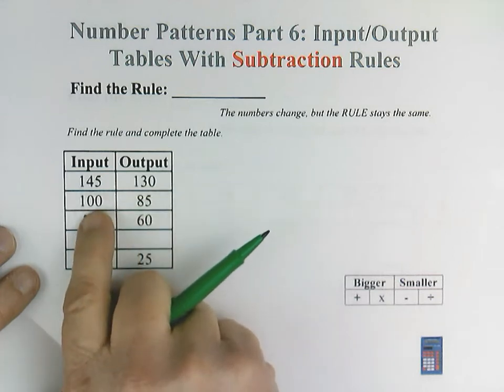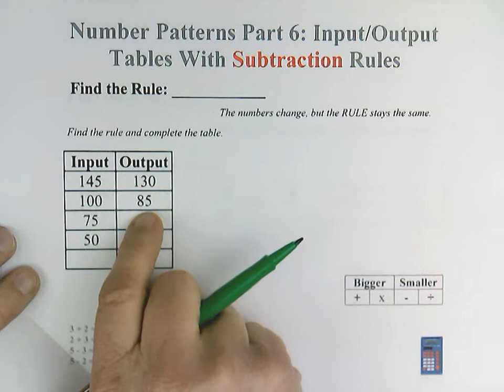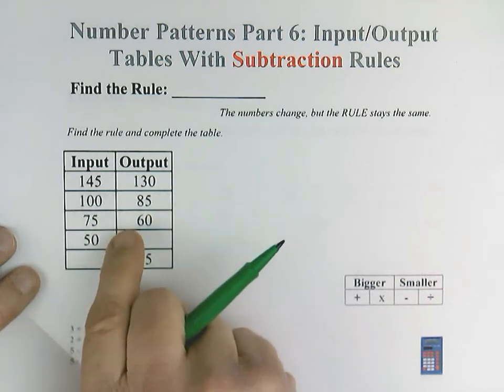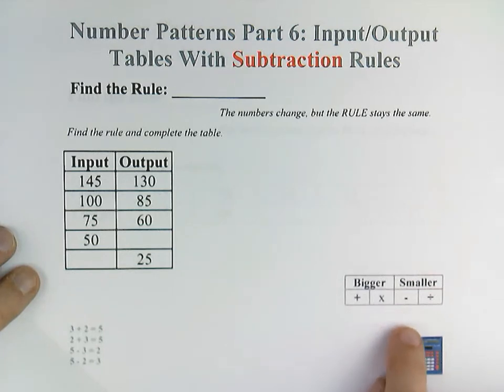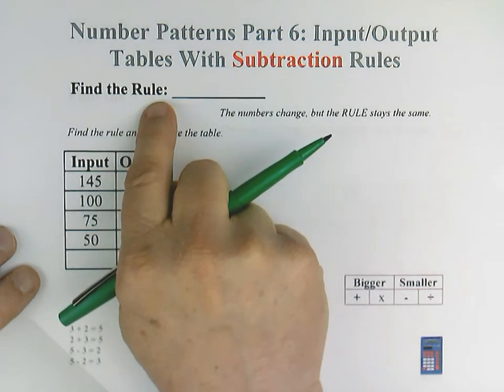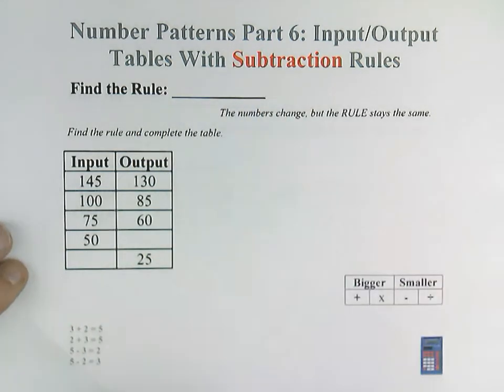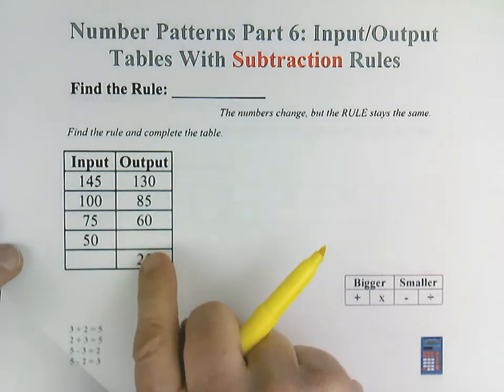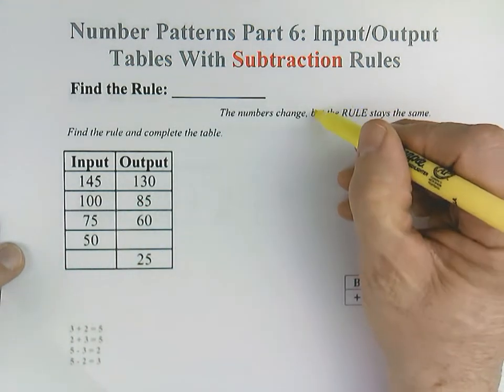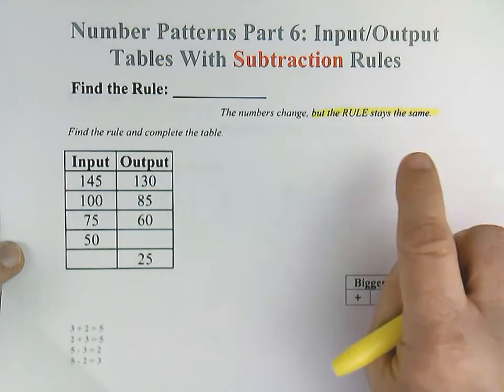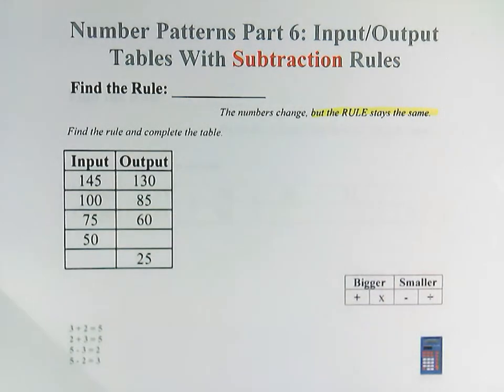100 is what we start with and it turns into 85. It's our job to figure out which change is happening. Are we adding or multiplying, subtracting, or dividing? And that is called the rule. Today we're going to focus on rules that do have subtraction, but one important thing to remember is that the numbers will change constantly. No two numbers are alike, but in an input-output table the rule must stay the same.